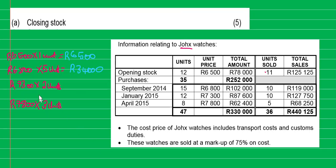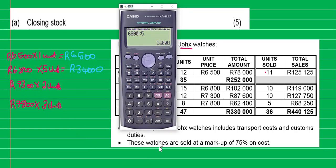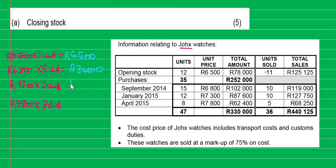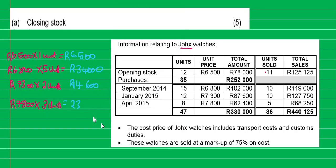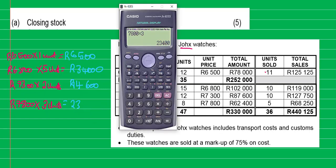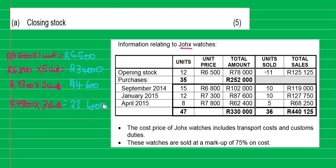The next one is 7,300. Seven thousand three hundred multiplied by two units gives us 14,600. Then the last one is 7,800 times three units, which gives us 23,400.